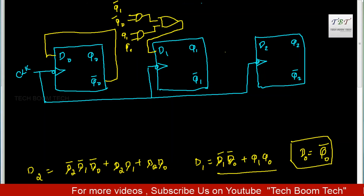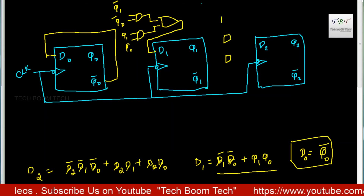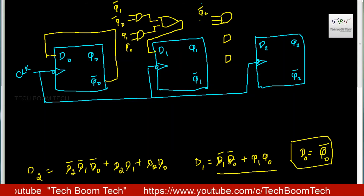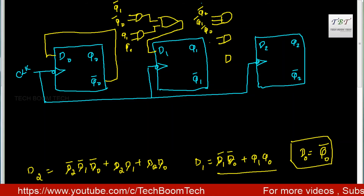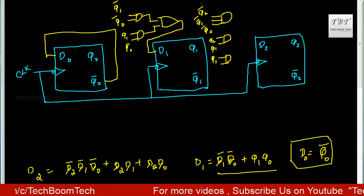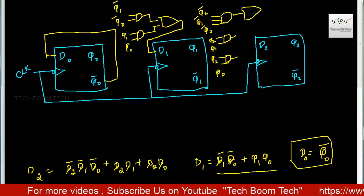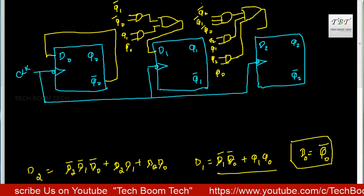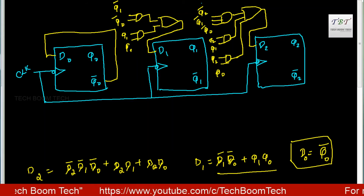For D2, we have 3 AND gates. The first AND gate has Q2 bar, Q1 bar, and Q0 bar. The second AND gate has Q2 and Q1. The third AND gate has Q2 and Q0. The three AND gate outputs are connected to an OR gate, and the OR gate output is connected to D2.